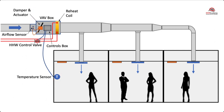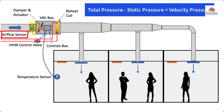There is an airflow sensor at the inlet of the box, and that is used to adjust the damper position by measuring the airflow at the inlet of the box. The airflow sensor measures total pressure and static pressure to determine the velocity pressure, which helps the controller determine the CFM through the inlet of the VAV box. Velocity pressure equals total pressure minus static pressure.